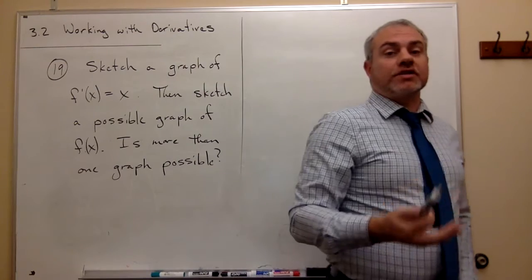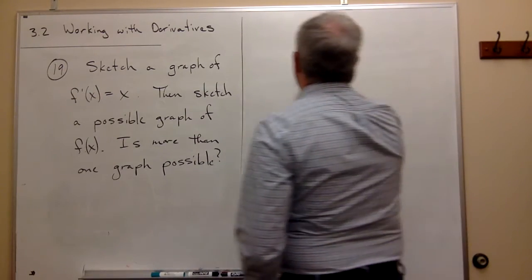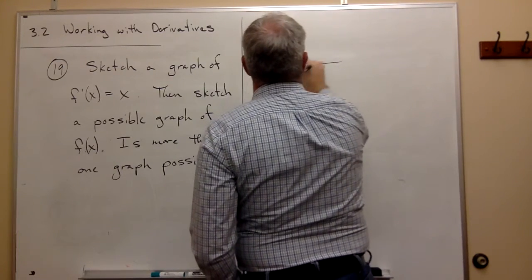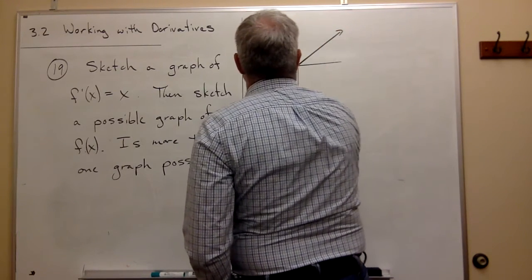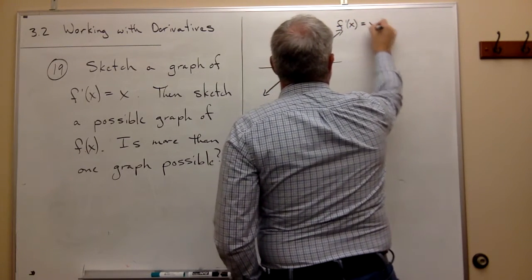So let's start out, let's just sketch a graph of f prime of x is equal to x. That's easy enough. That's just a simple diagonal line. This is f prime of x equals x.